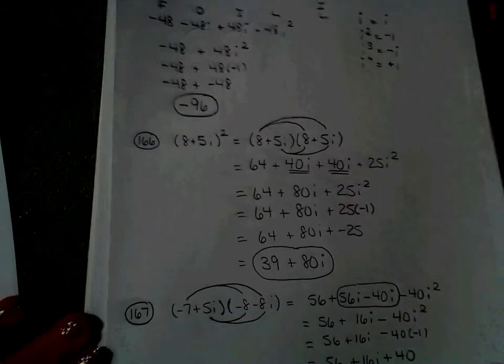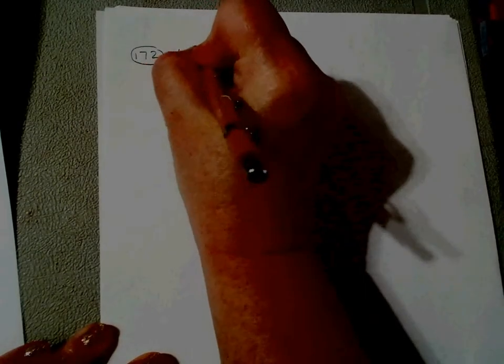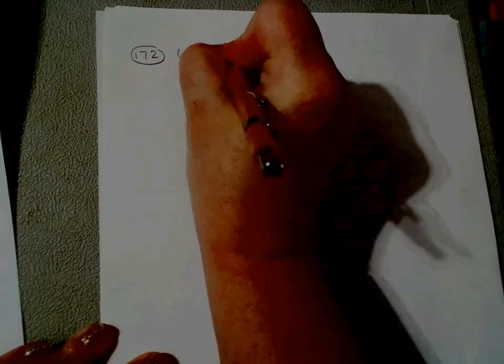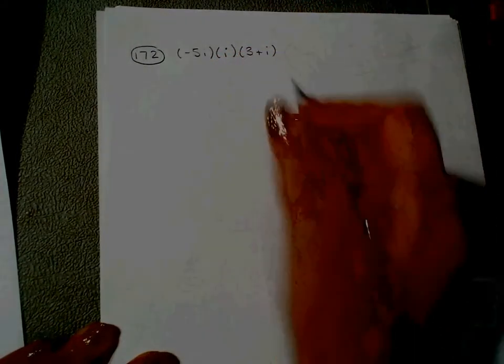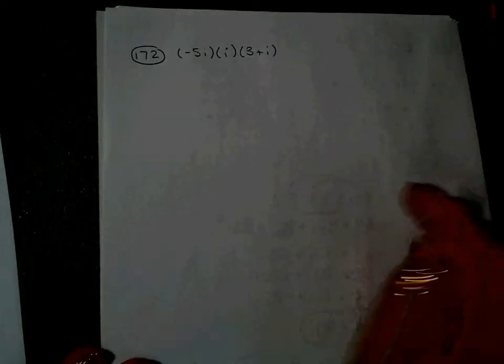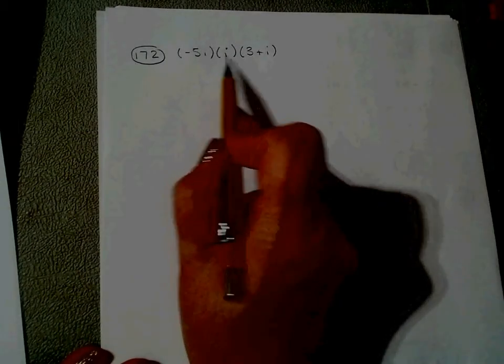Now look with me please at problem 172. I'm going to work 172 and then I'm going to ask you to try one on your own. 172 is not exactly a FOIL problem. It is a big multiplication problem. It's this times this times this.